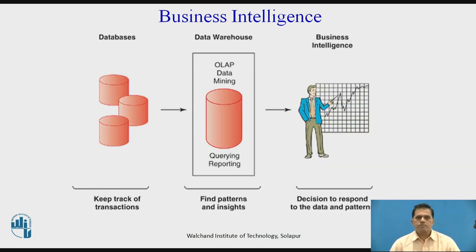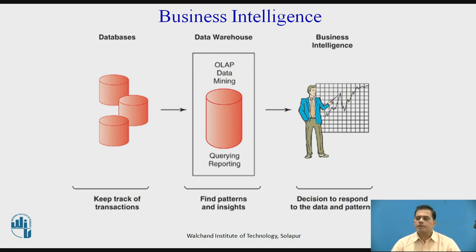This diagram illustrates the process of transforming data into business intelligence. Business intelligence tools do not necessarily find clear-cut answers, but can find patterns and relationships in data that greatly improve business decisions and offer insight into the business environment. The diagram shows the flow from database to data warehouse to business intelligence, where information is processed and people make proper decisions in their business environment.